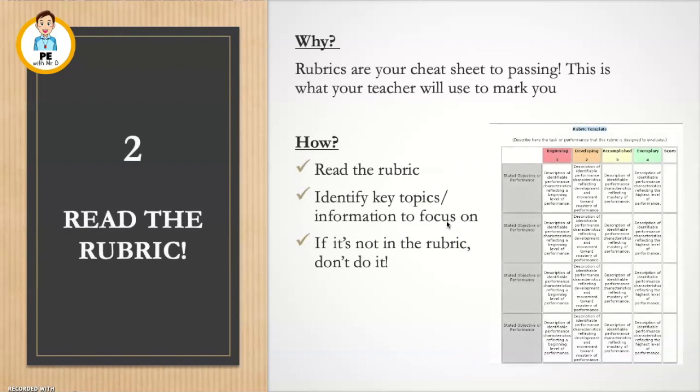Tip number two: read the rubric. If your test or assessment has a rubric this is your cheat sheet to passing because this is exactly what your teacher will use to mark you. Down the side here you will have the criteria or the different things that are being marked and up the top here you'll have the continuum from beginning up to exemplary. It may be from year 7 up to year 10. This tells you how well you've done each of the criteria. It's important to read this rubric, identify the key topics - these are our criteria - and if it's not on the rubric don't do it.